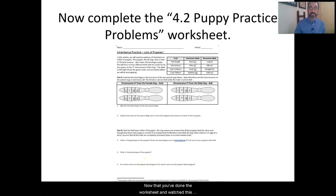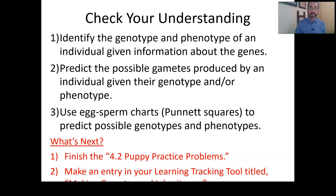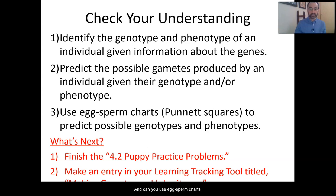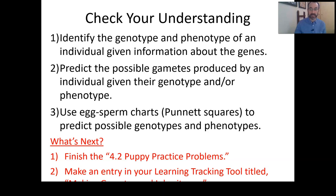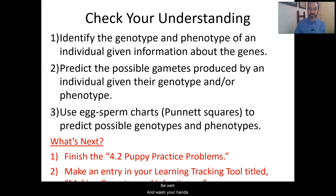Now that you've done the worksheet and watched this video, let's check your understanding. Can you identify the genotype and phenotype of an individual given information about the genes? Can you predict the possible gametes given their genotype and/or phenotype? And can you use egg sperm charts — Punnett squares — to predict possible genotypes and phenotypes of offspring? Make an entry in your learning tracking tool titled 'Making Gametes and Inheritance.' Explain what we've learned, how it helps explain how a potentially deadly disease can persist through a family over time, record any questions, and self-assess. Thank you very much. Be safe, be well, and wash your hands.